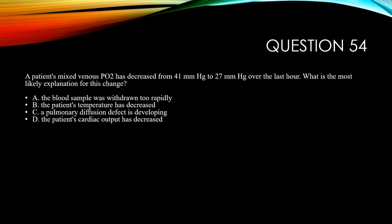Question 54. A patient's mixed venous PO2 has decreased from 41 to 27 torr (millimeters of mercury) over the last hour. Which of the following is the most likely explanation for this change? A, the blood sample was withdrawn too rapidly. B, the patient's temperature has decreased. C, a pulmonary diffusion defect is developing. And D, the patient's cardiac output has decreased.